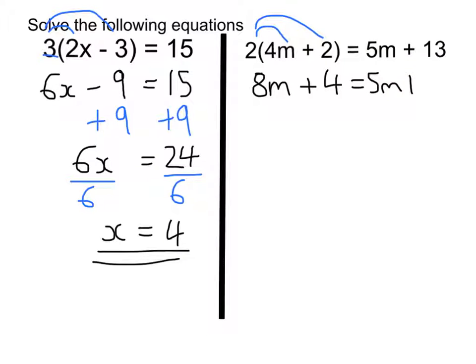Now it looks like one of those equations where we have letters on both sides. So let's move the letters to one side. So I'm going to move the 5m. As it's a positive 5m, I'm going to take away 5m from both sides. 8m minus 5m is 3m. So this is 3m plus 4 is equal to 13.